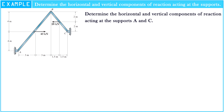Look at the figure of the problem. We see that the frame is connected by a hinge at B. On segment AB, there is a 40 kN load to the right-hand side in the middle. And at BC, there is a 28 kN load to the left-hand side in the middle of the length.